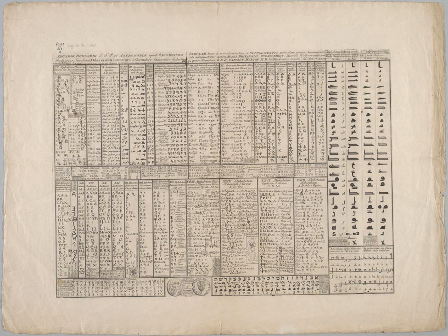An alphabet is a standard set of letters that represent the phonemes of any spoken language it is used to write. This is in contrast to other types of writing systems, such as syllabaries in which each character represents a syllable, and logographic systems in which each character represents a word, morpheme, or semantic unit.